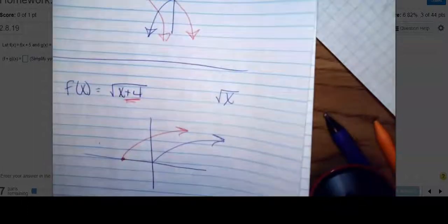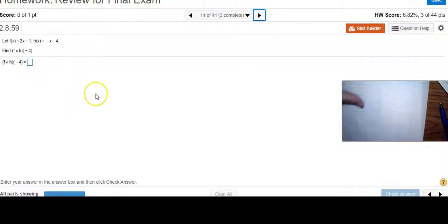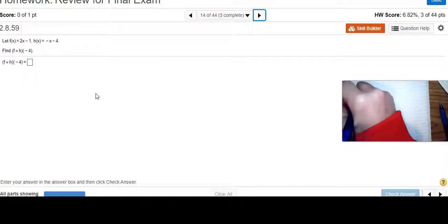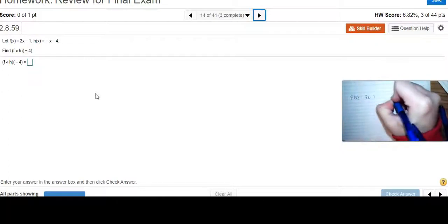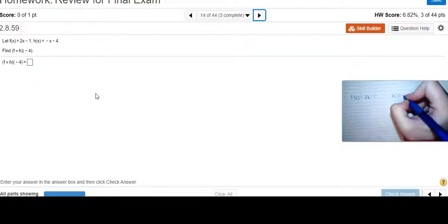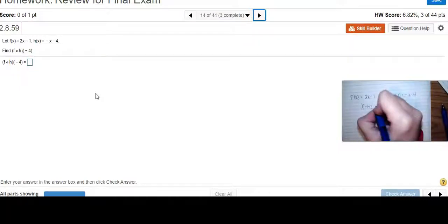Next problem. I did all those things and gave the domain. Now I've got composition functions. The problem is: let f(x) = 2x-1 and h(x) = -x-4. Find the composition of f and h at -4.